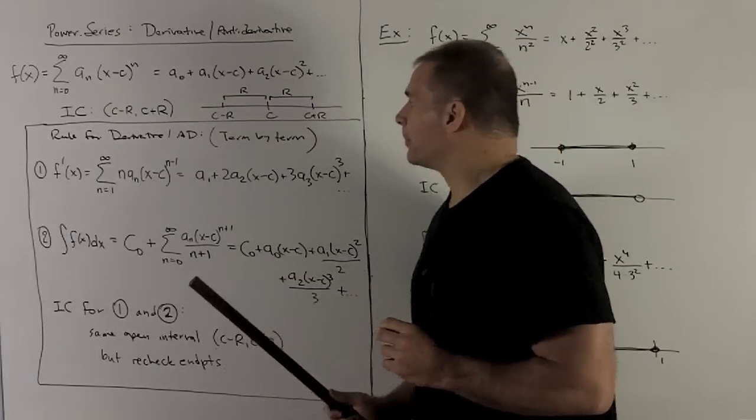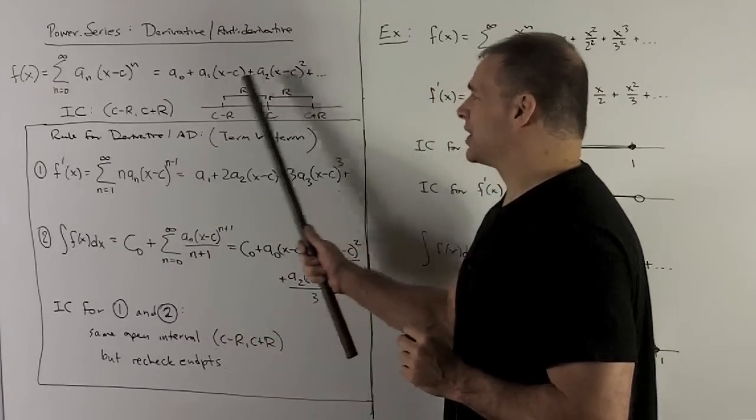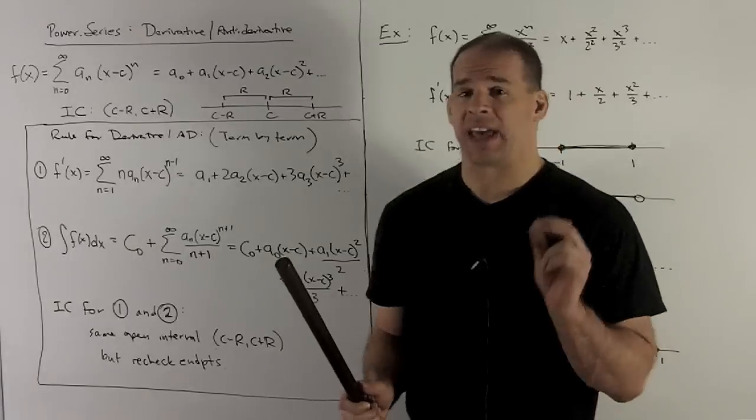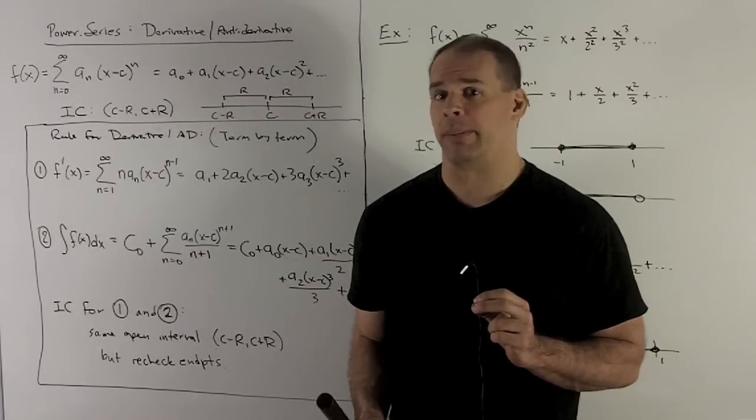The rule is going to be your interval of convergence for these new series going to be exactly the same as your original one, except maybe at the endpoints. So you'll need to recheck your endpoints to see whether they make it through or not.